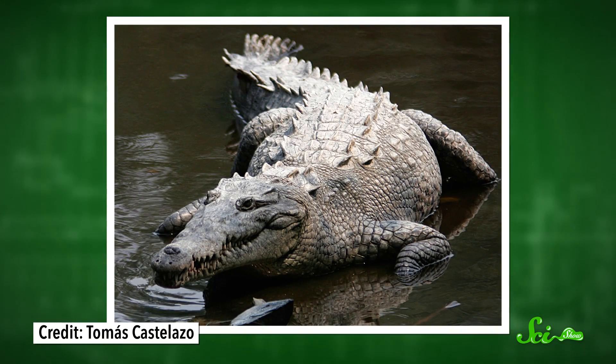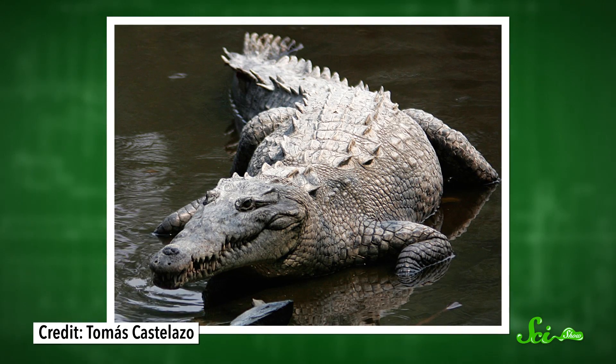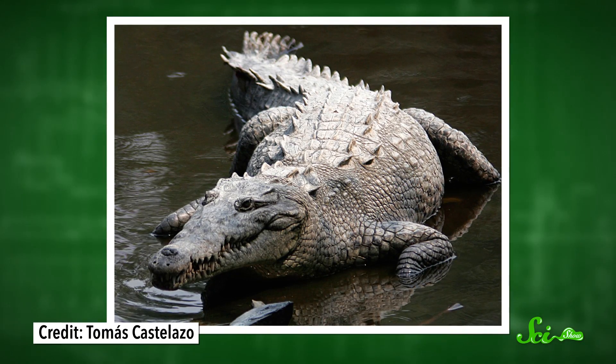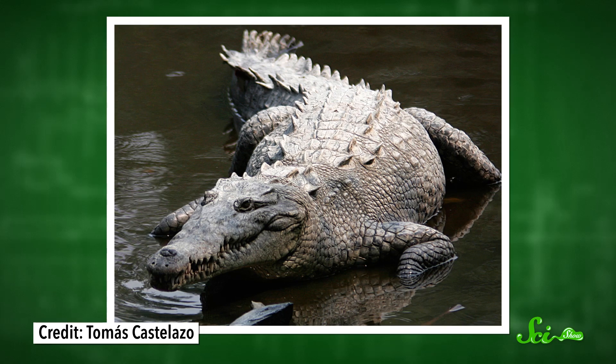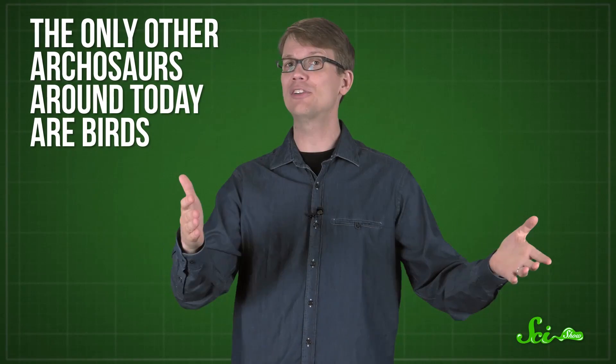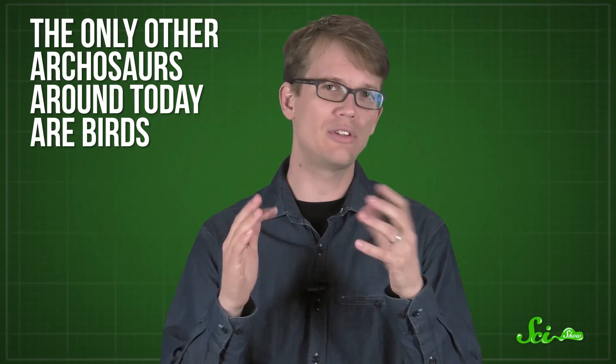Pseudosuchians were nearly wiped out in another mass extinction at the end of the Triassic. Only one lineage survived — one that took to living in swamps and gave rise to modern crocodiles and alligators. Although, thankfully, the modern versions don't run around on two legs. The only other archosaurs around today are birds.